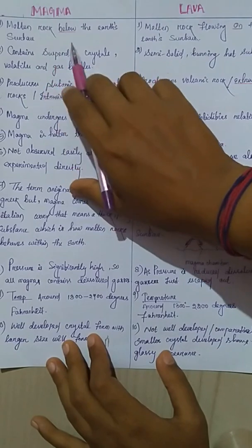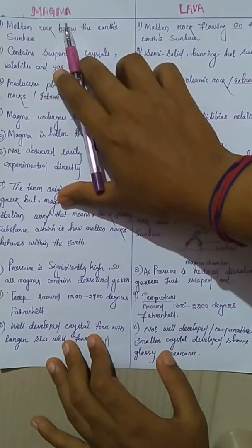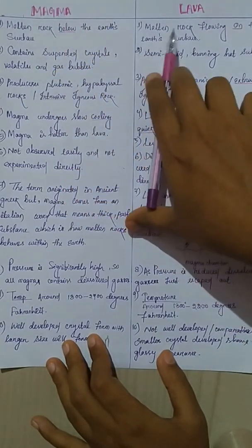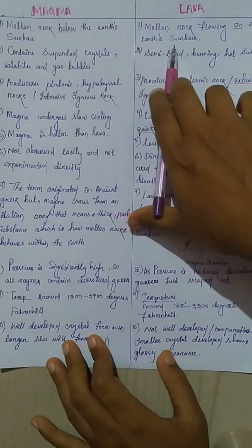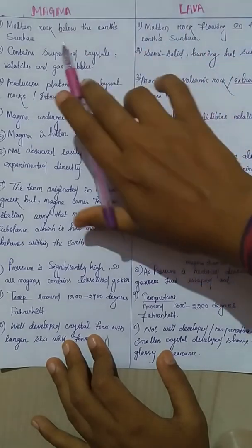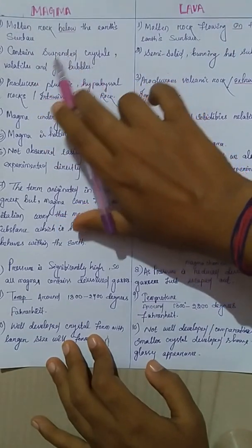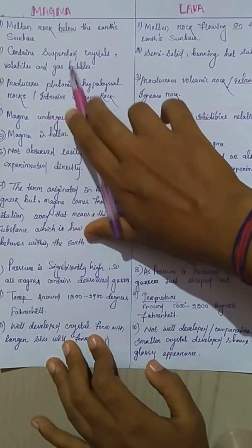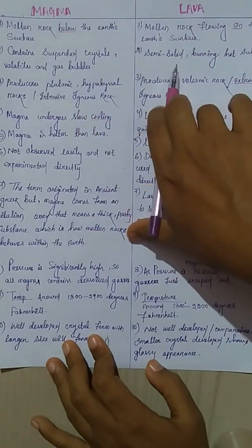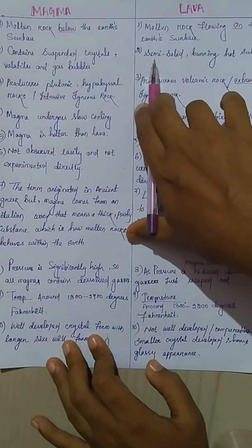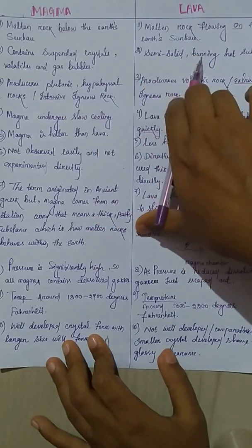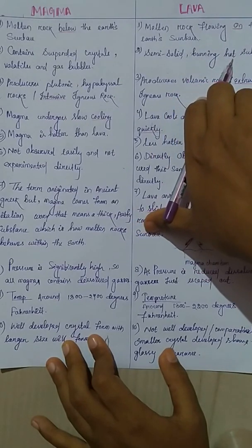Molten rock below the earth's surface is magma. But molten rock flowing on the earth's surface is lava. Magma contains suspended crystals, volatiles along with gas bubbles. But in case of lava, it is a semi-solid material which is burning and hot substance.